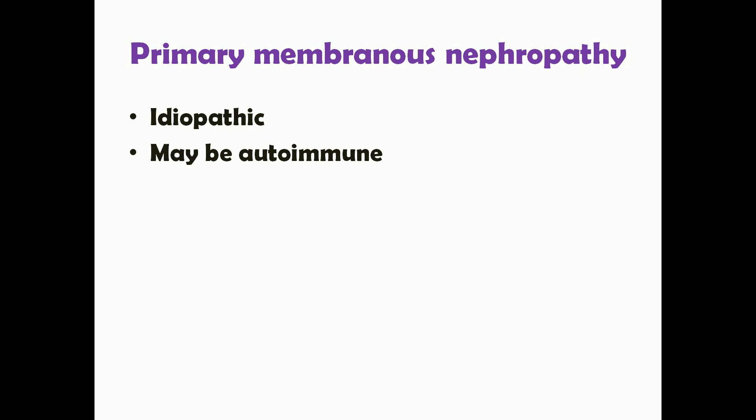In primary membranous nephropathy there may be an autoimmune basis, and scientists suspect that HLA alleles may be linked to developing it. You just need to know that in primary membranous nephropathy there may be an autoimmune basis and HLA alleles may be linked to it — similar to how HLA alleles have been linked to conditions like psoriasis and diabetes mellitus.